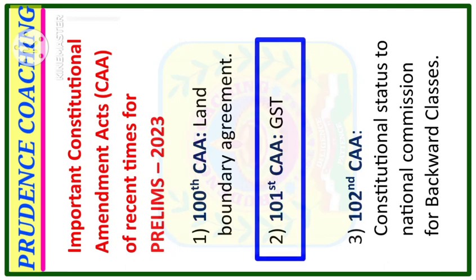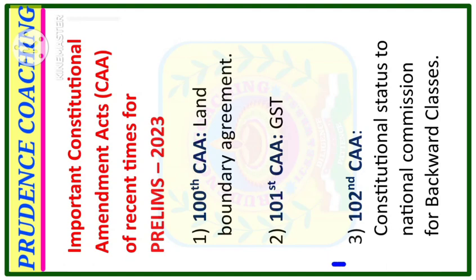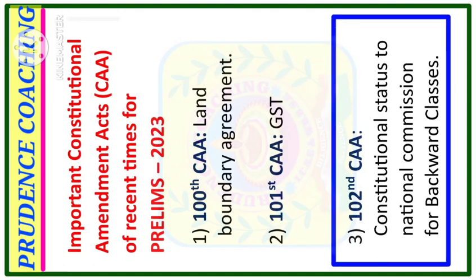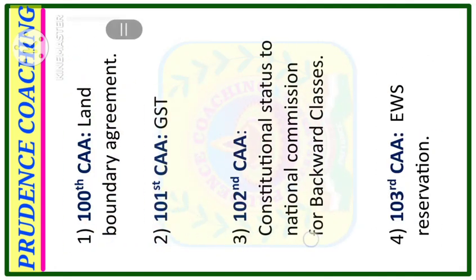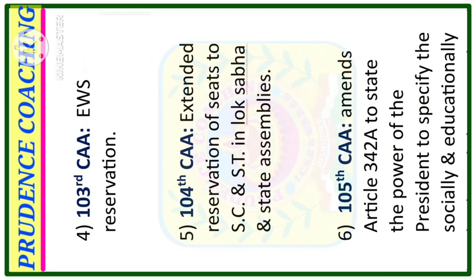The 101st CAA is GST. The 102nd CAA grants Constitutional Status to the National Commission for Backward Classes. The 103rd CAA is EWS Reservation.